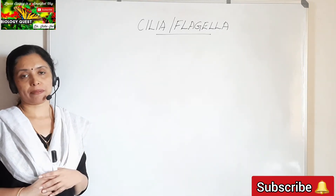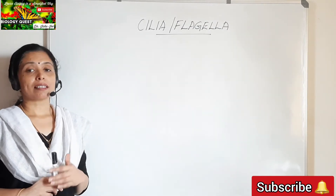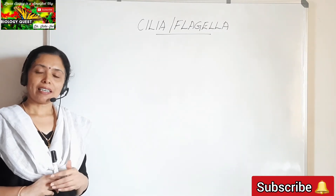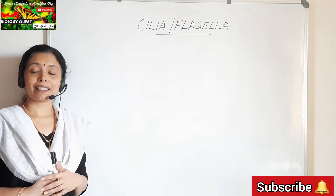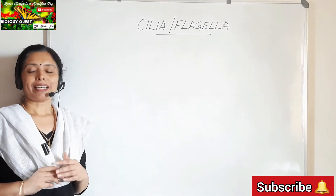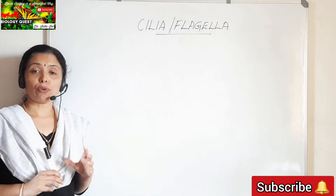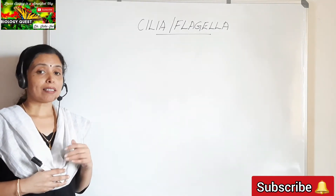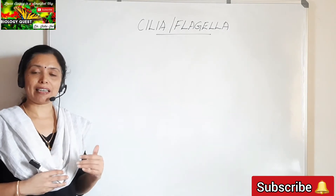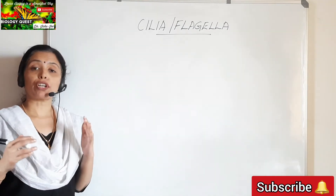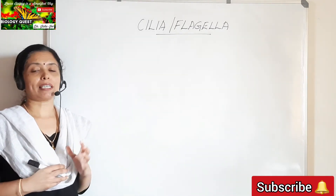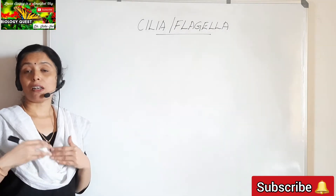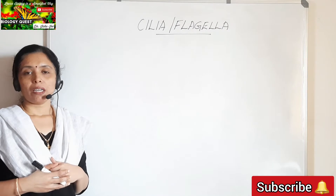Both cilia and flagella are similar in structure, but how will you differentiate cilia from flagella? Cilia are shorter in size and more numerous in number when compared to flagella. Flagella are fewer in number and longer in length. That is how morphologically we differentiate the two.